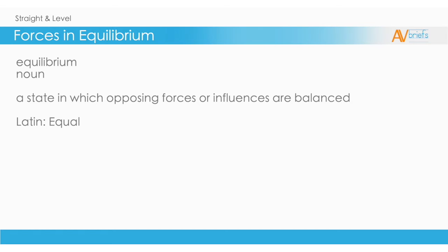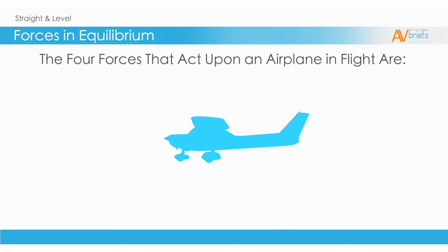In its most basic form, from its Latin origin, it means equal. Now that we are sure of what we are discussing, let's look again at the four forces that act upon an airplane in flight. We have lift acting upwards, opposing that is weight acting earthward. Thrust is acting forward, drag is acting rearward.